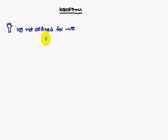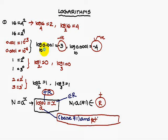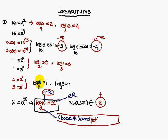From the examples you can conclude: logarithm of a number may also be negative. Log 1 to any base is 0 — that you should always remember. And the logarithm of a number to the same base is always equal to 1.